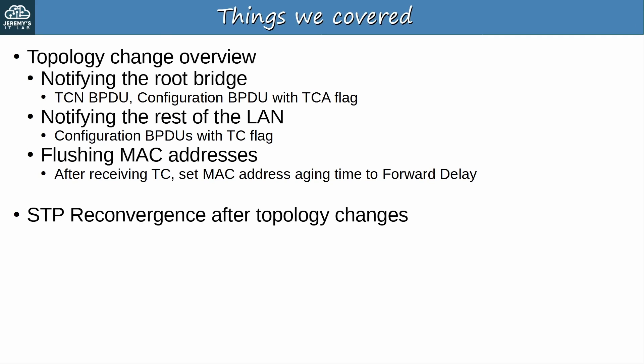Here's what we covered in this video. We looked at how topology changes work. The switch that detects the topology change will notify the root bridge, and that process involves TCN BPDUs and configuration BPDUs with the TCA flag. To notify the rest of the LAN, the root bridge sets the TC flag on configuration BPDUs it sends. Switches that receive a BPDU with the TC flag will set their MAC address aging time to the forward delay timer. After covering that process, we looked at a few examples of reconvergence after topology changes — an example where reconvergence was immediate, an example where it took 30 seconds, and an example where it took 50 seconds. Now let's do a quiz to test your understanding.